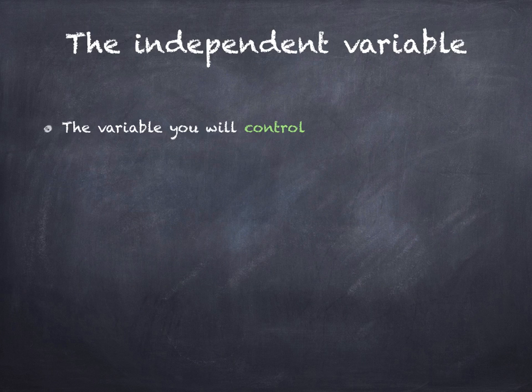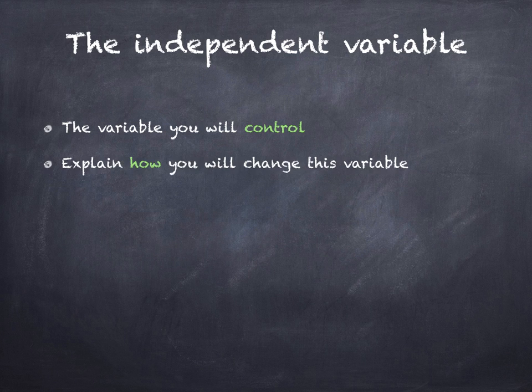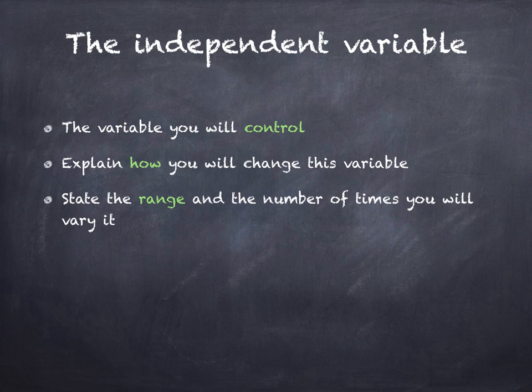So the independent variable is the one that you control. And you need to explain how you will change this variable. State the range and the number of times you will vary it. State the units that you will use.